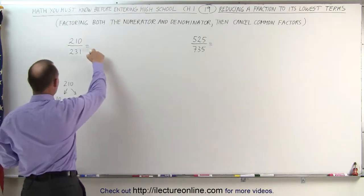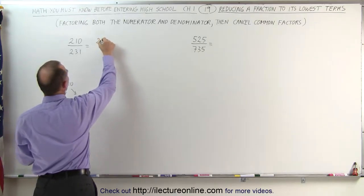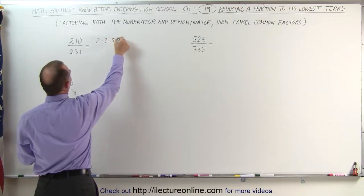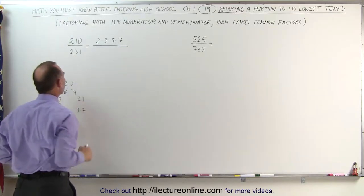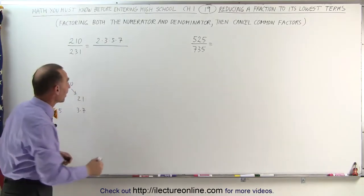Which means that 210 can be written as 2 times 3 times 5 times 7, and then we divide that by 231, which can also be factored.